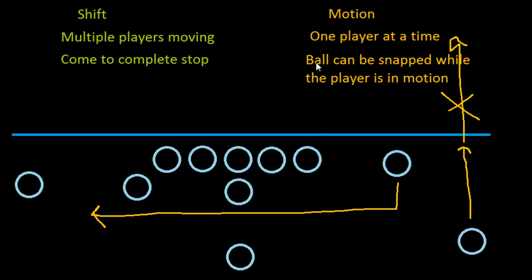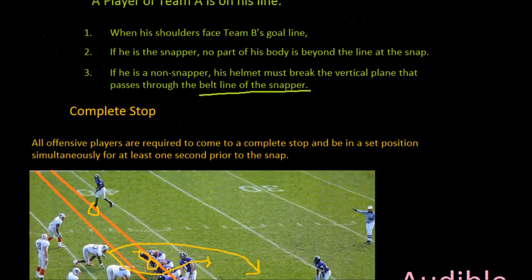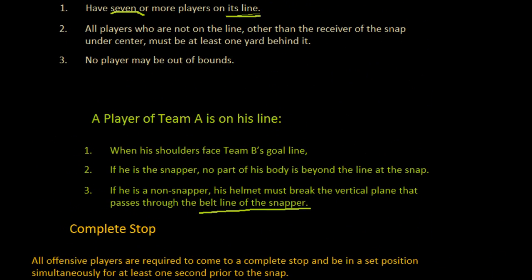Once a player in motion stops, another player is allowed to go in motion — since it's one player at a time. With a shift, multiple guys are moving but must come to a stop; with motion, just one player at a time but no stop is required. You can shift and send as many guys in motion before the snap as you want, but remember there's a play clock counting down, so you won't have a lot of time for excessive pre-snap movement. That pretty much sums up shifting, sending guys in motion, and what you can and cannot do before the snap.